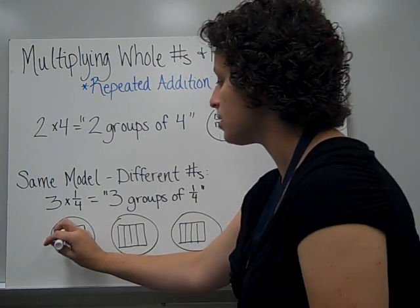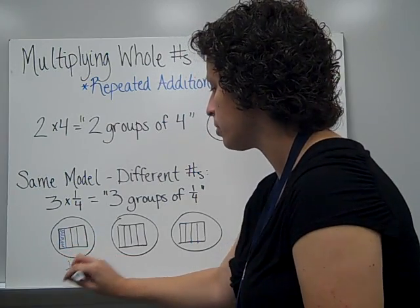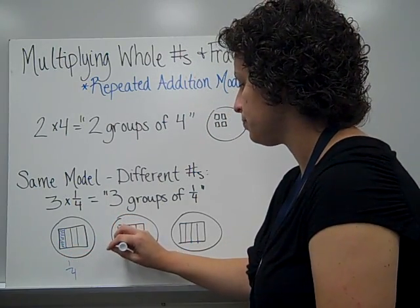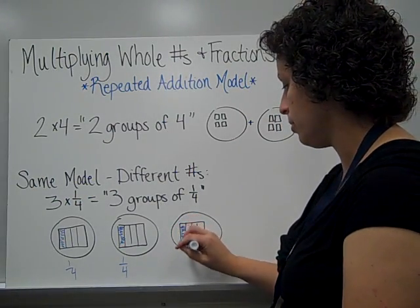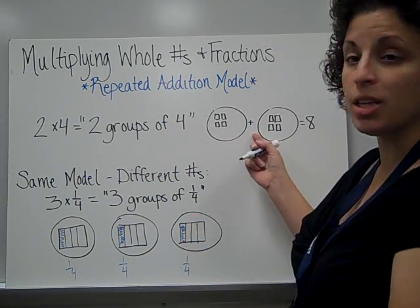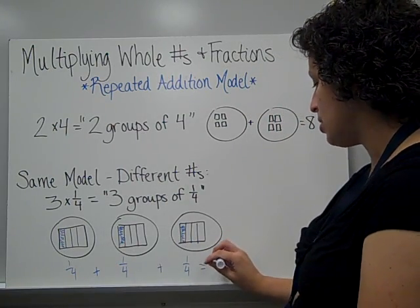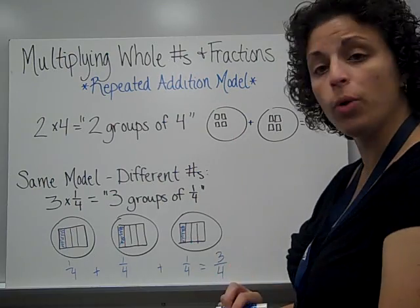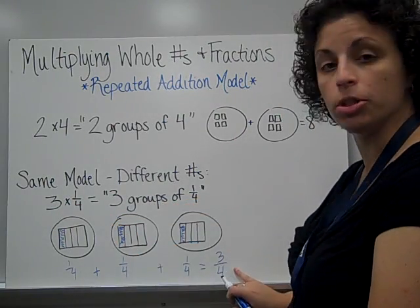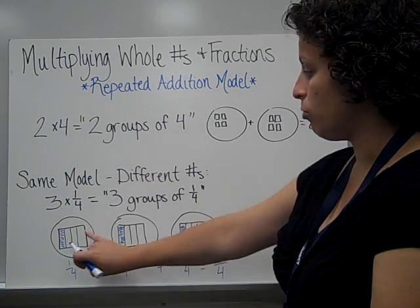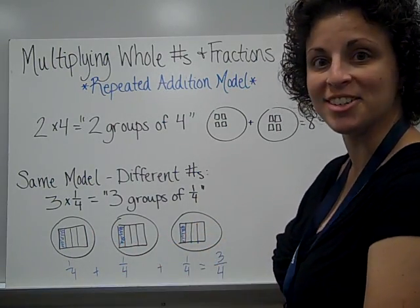The fraction was 1 fourth, so out of these four pieces in each of them, I need to shade or color in 1 fourth in each one. There's another 1 fourth, and another 1 fourth. And then just like before, you add those together: 1 fourth plus 1 fourth plus 1 fourth is equal to 3 fourths. So 3 times 1 fourth is equal to 3 fourths. I repeatedly drew the same thing and then added them together — repeated addition model.